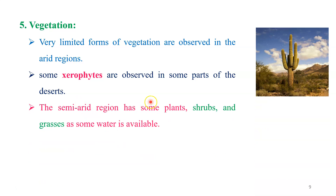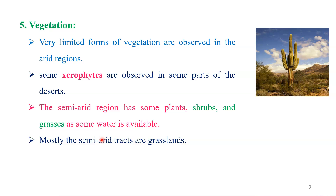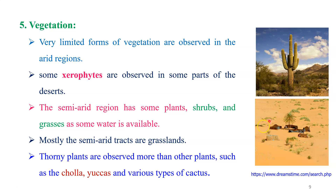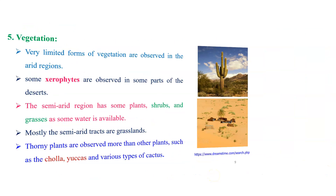In the semi-desert region, we have some plants, shrubs, or grasses available near the oasis or where water is available. The semi-arid tracts or areas have grassland. In this feature, you can clearly see that this is a place where scattered vegetation is available. The cactus category — most of the plants observed in the desert region — especially trees such as chollas, agaves, and various types of cactus, you observe in the desert region.